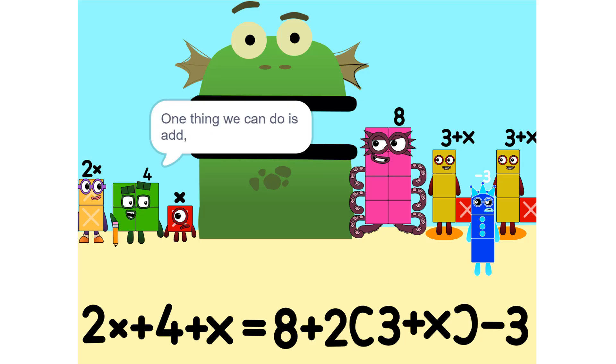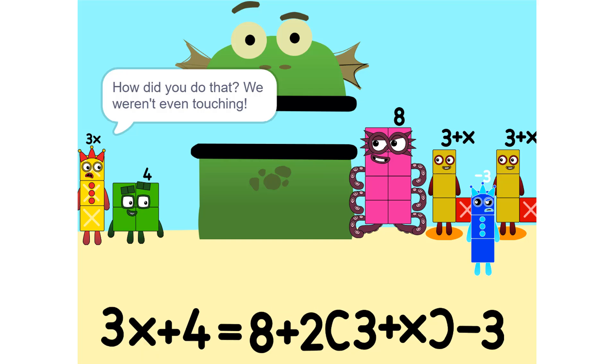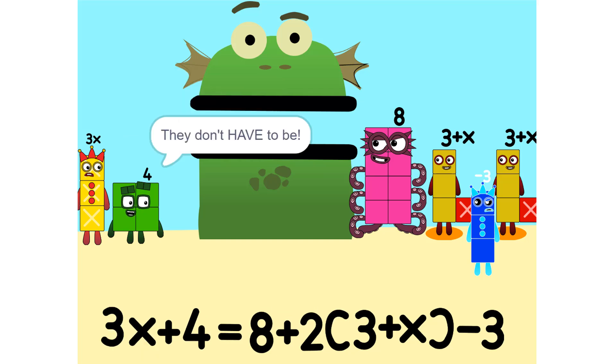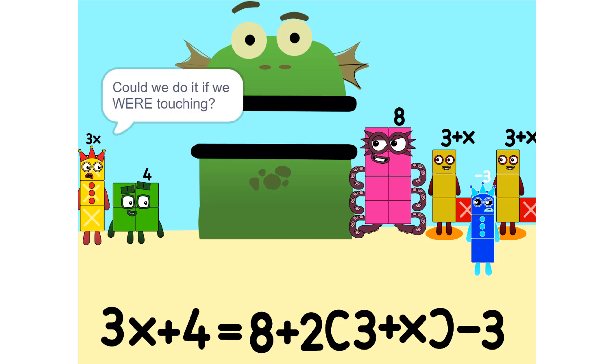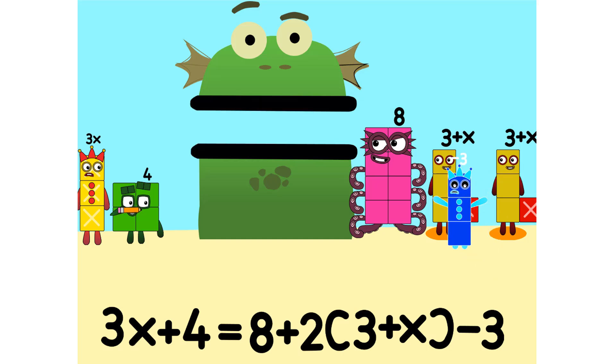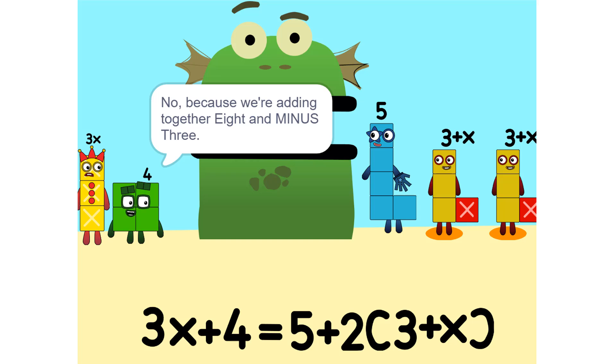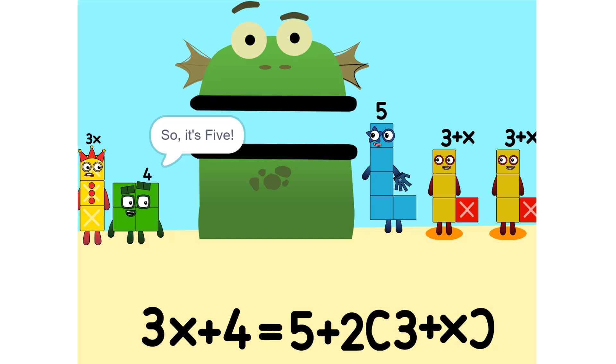One thing we can do is add these two together. How did you do that? We weren't even touching. They don't have to be. Could we do it if we were touching? Yeah. We can also add these together. 5. Wouldn't it be 11 since 8 plus 3 is 11? No, because we're adding together 8 and minus 3, or negative 3, so it's 5. Oh.